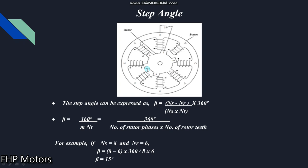We can also find the step angle as beta equals 360 divided by m into Nr, where m is the number of stator phases. For example, if Ns equals 8 and Nr equals 6, then using the above formula, beta equals (8 minus 6) upon (8 into 6) into 360. So beta equals 15, meaning the step angle is 15 degrees.